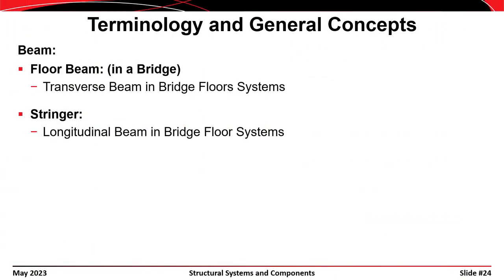More types of beams: a floor beam, in a bridge, is a transverse member — transverse relative to the direction of traffic or the roadway. A stringer in a bridge is a longitudinal element. Here's a picture of a bridge system being worked on — clearly not in the United States based on the safety practices shown. It's a truss bridge with longitudinal stringer elements going in the direction of traffic and transverse floor beam members.